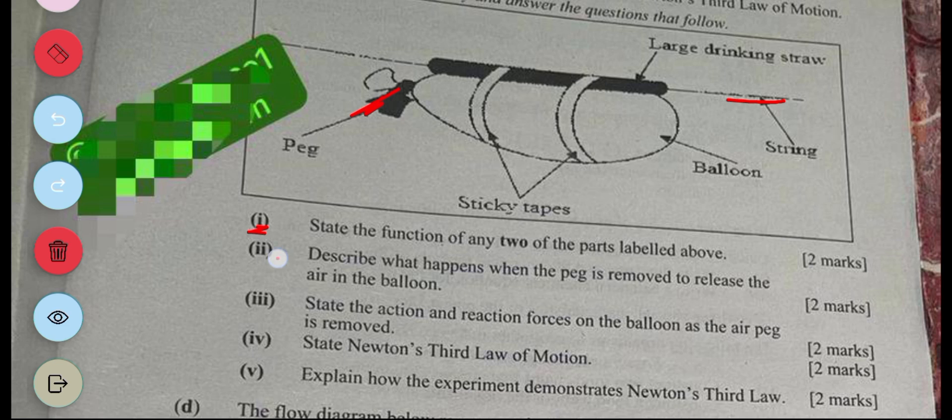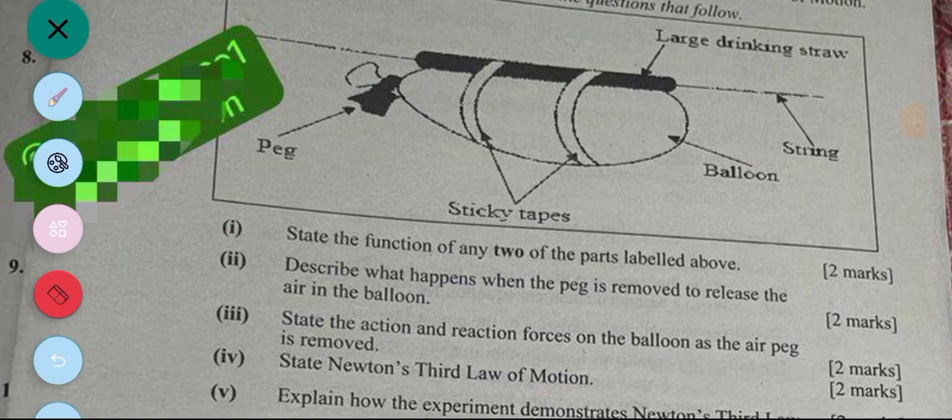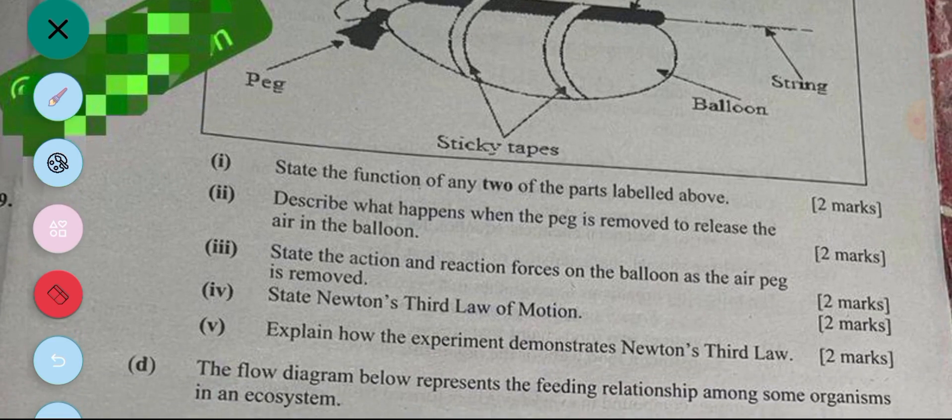The next question is describe what happens when the peg is removed to release the air in the balloon. Okay, so when the peg is removed, the balloon will move based on the direction that the string has been positioned. Then iii, state the action and reaction on the balloon as the air peg is removed. So the action is the air in the balloon will move backward and the reaction is the balloon will be propelled forward.